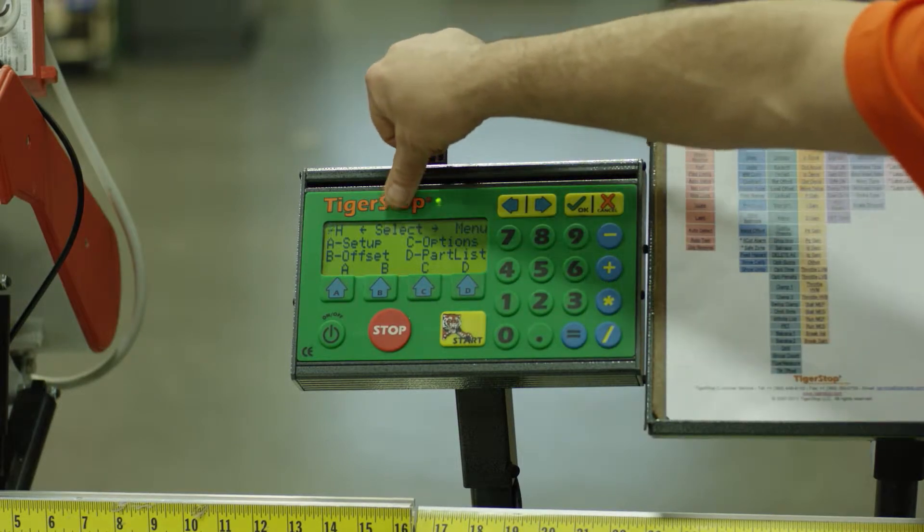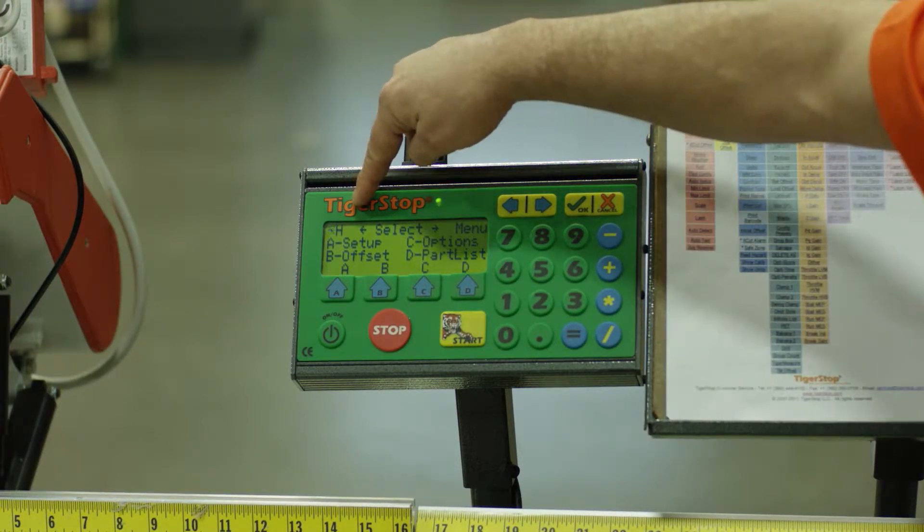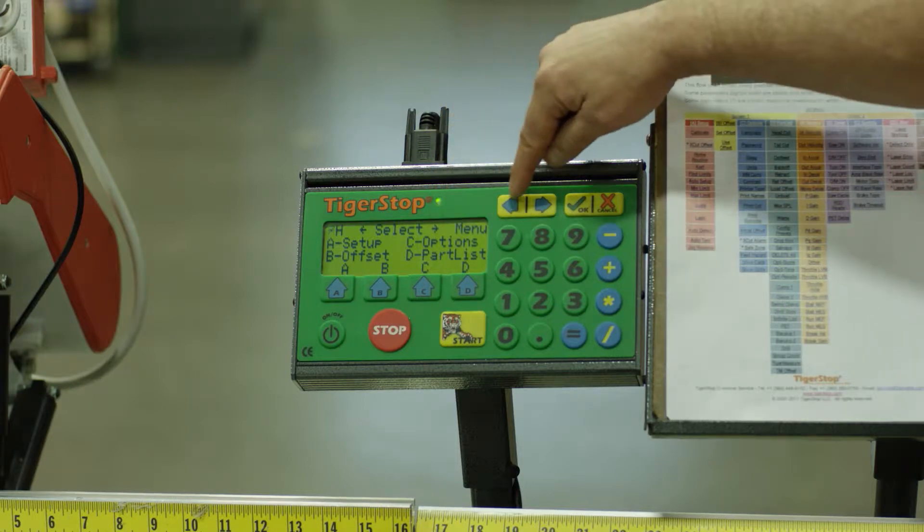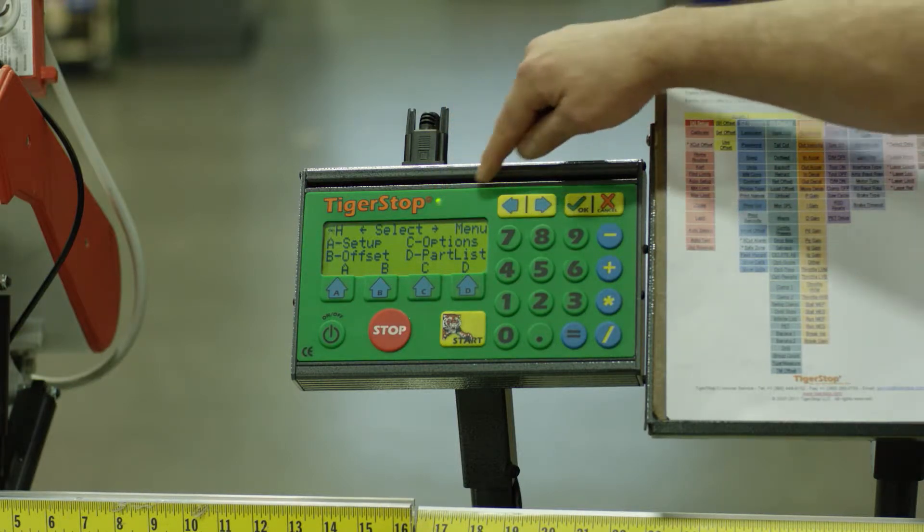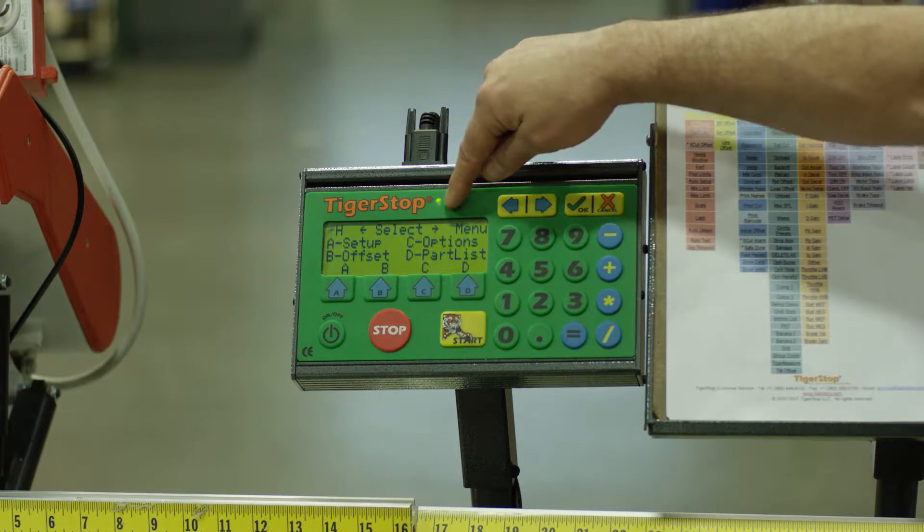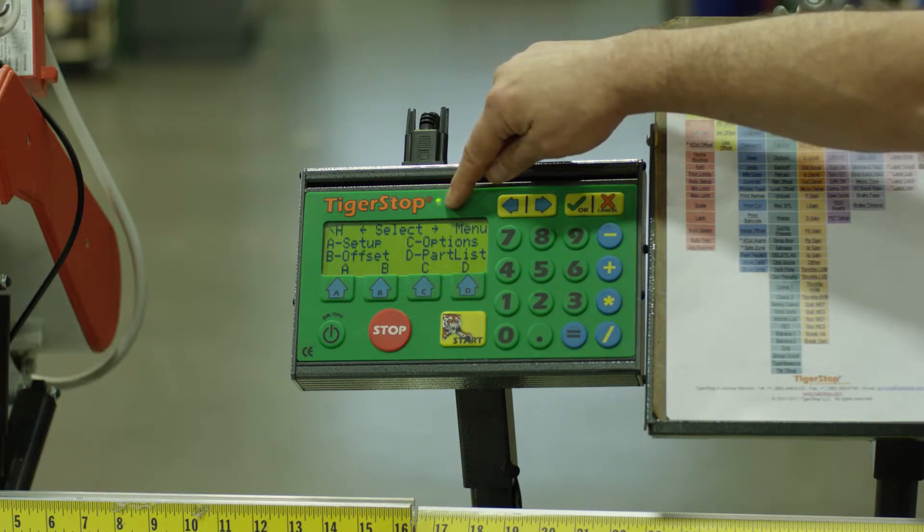You'll notice at the top of the screen, I have select, and I have a left and right arrow button. That corresponds to the left and right arrow button on the controller. This would be screen one, which is more of your operator menu screen.